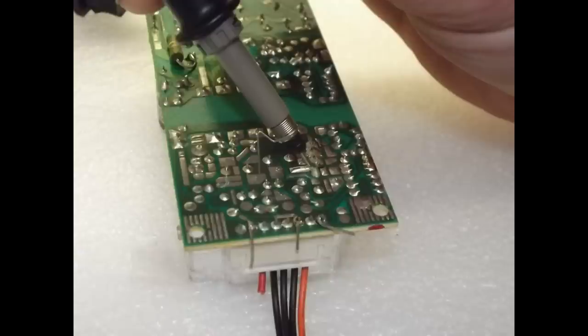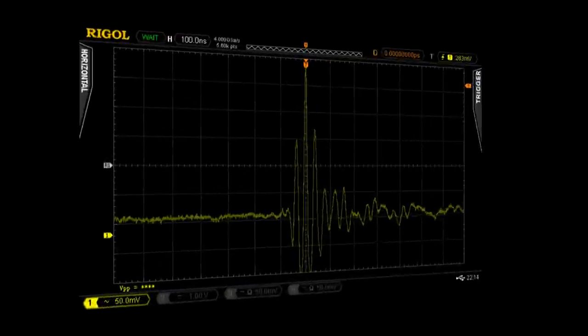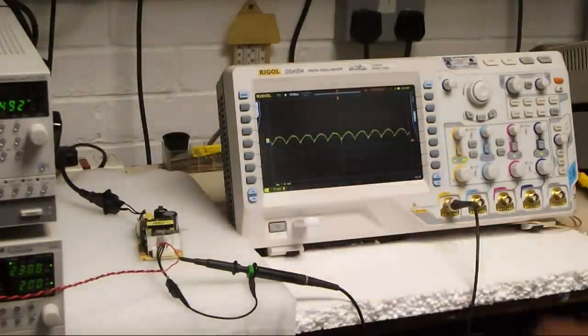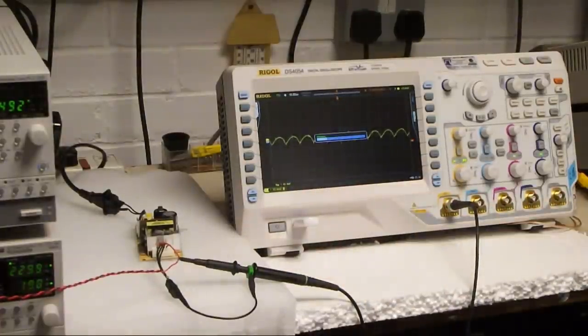Now, we'll be taking screenshots and putting them on a memory stick so that you can see the results more clearly. Like this trace for example. On this scope, it's simple. Pop a stick into the scope and press a button. Done.